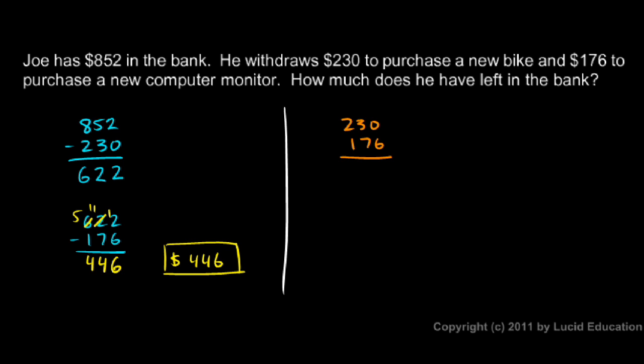$230 plus $176. And those are pretty easy to add. $0 and $6 is $6. $3 and $7 is $10. And then $2 and $1 and $1 is $4. So Joe is withdrawing a total of $406.